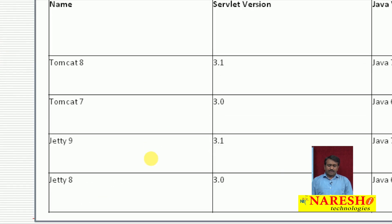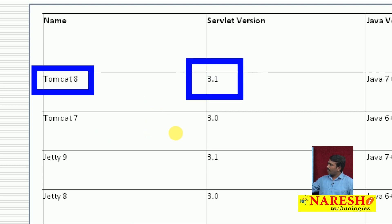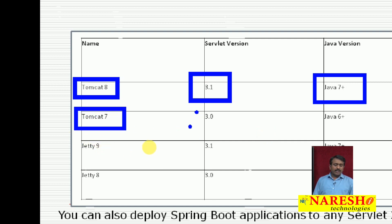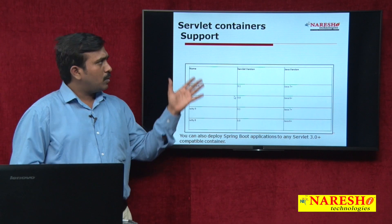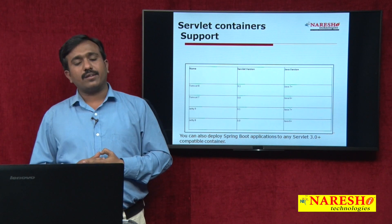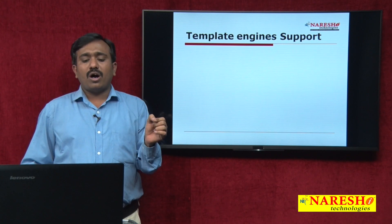An important point: when working with Tomcat 8, it requires servlet version 3.1 and a minimum Java 7 or higher. If you are using Tomcat 7, it requires servlet 3.0 and a minimum Java version of 6. Spring Boot supports deploying applications into any container, but the minimum servlet container version must be 3.0 or higher.